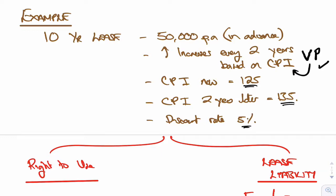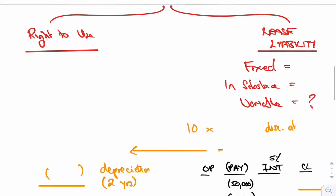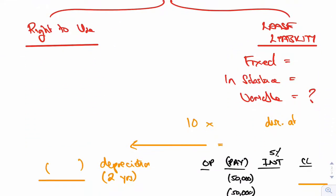Discount rate to be used is 5%. So we need a right-to-use asset and we need a lease liability. The lease liability we start off first. There was no fixed payments, no in-substance payments. We just need to work out what the variable ones were worth.